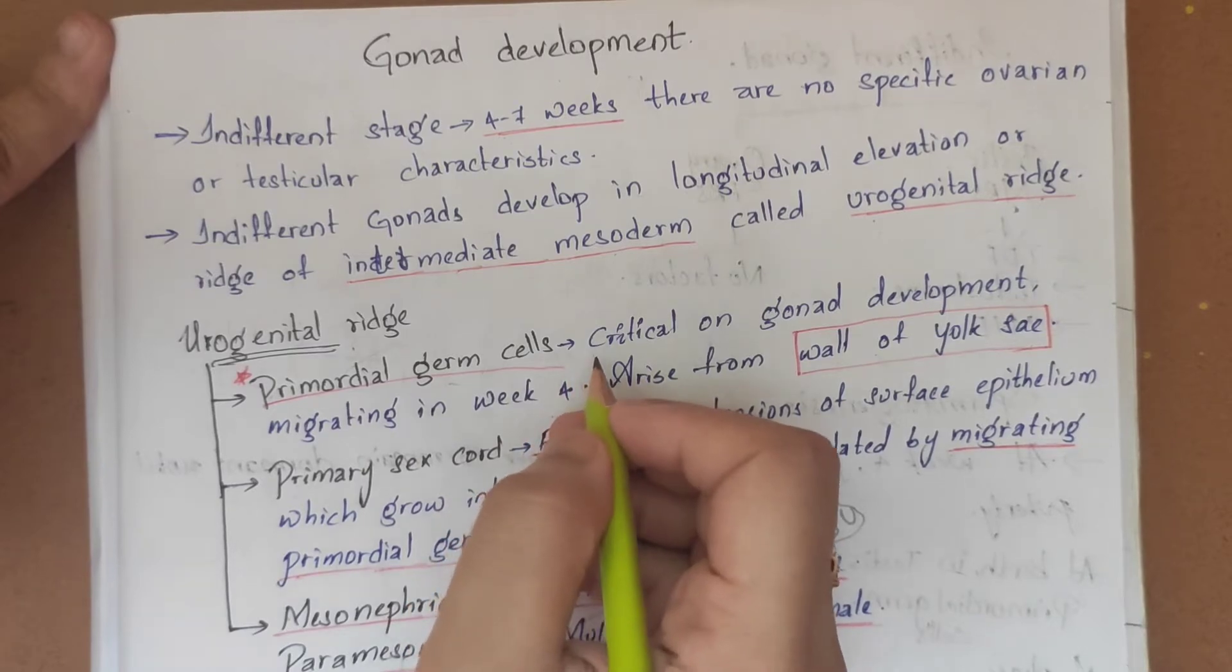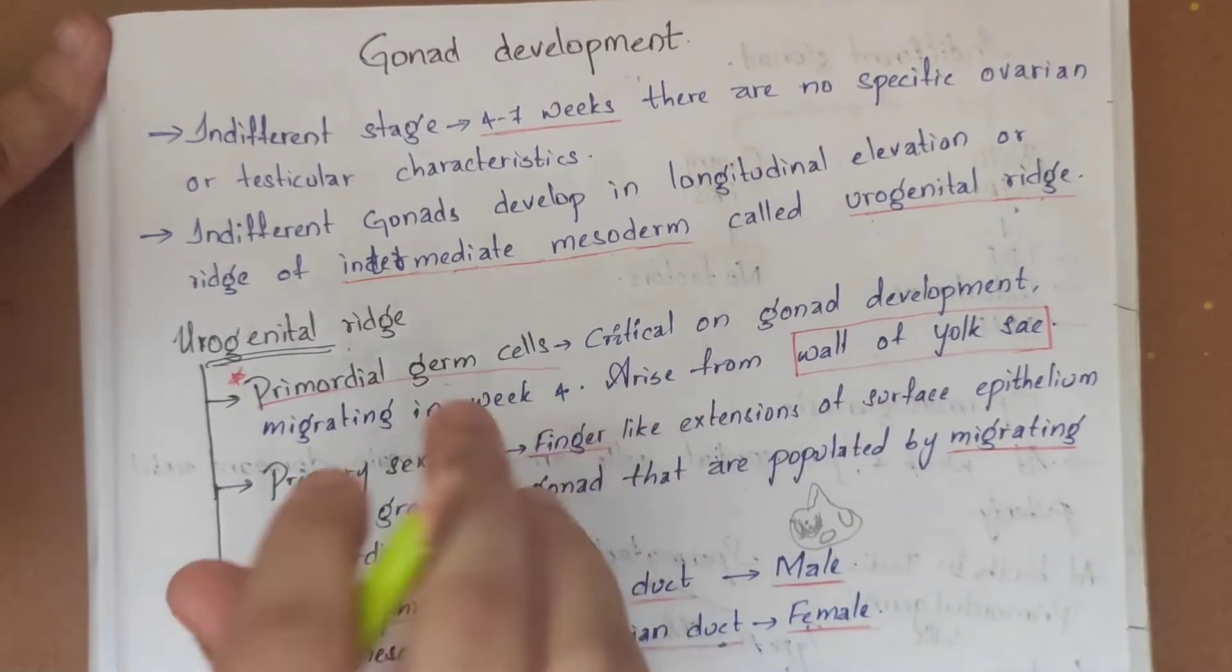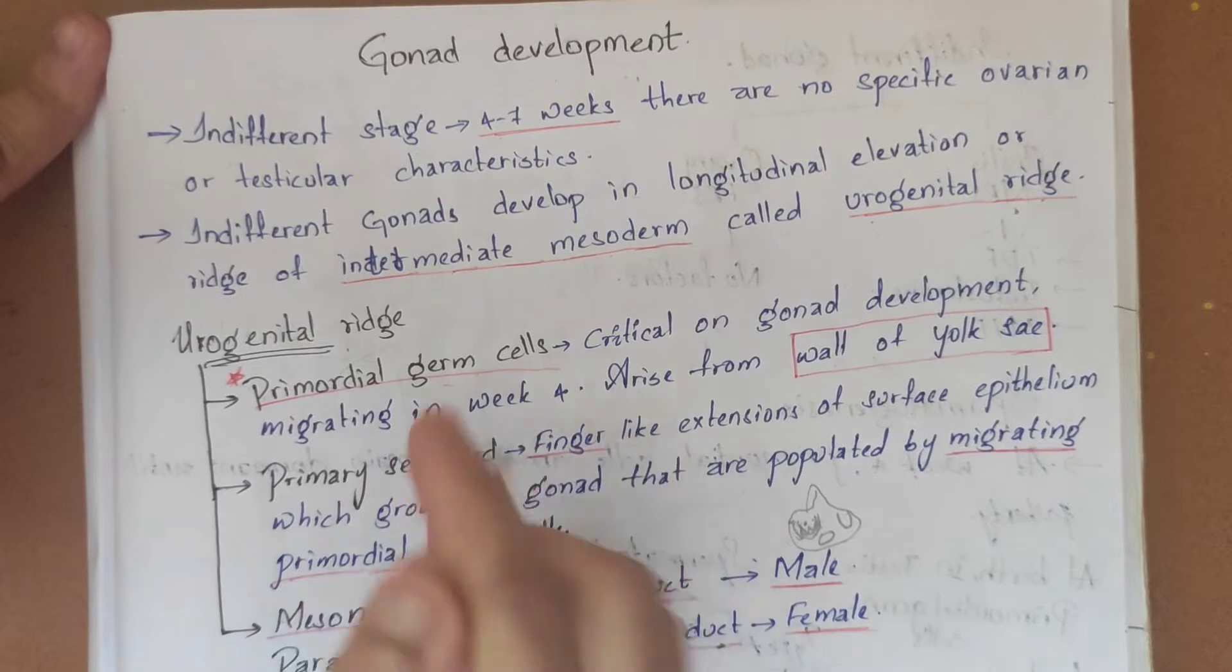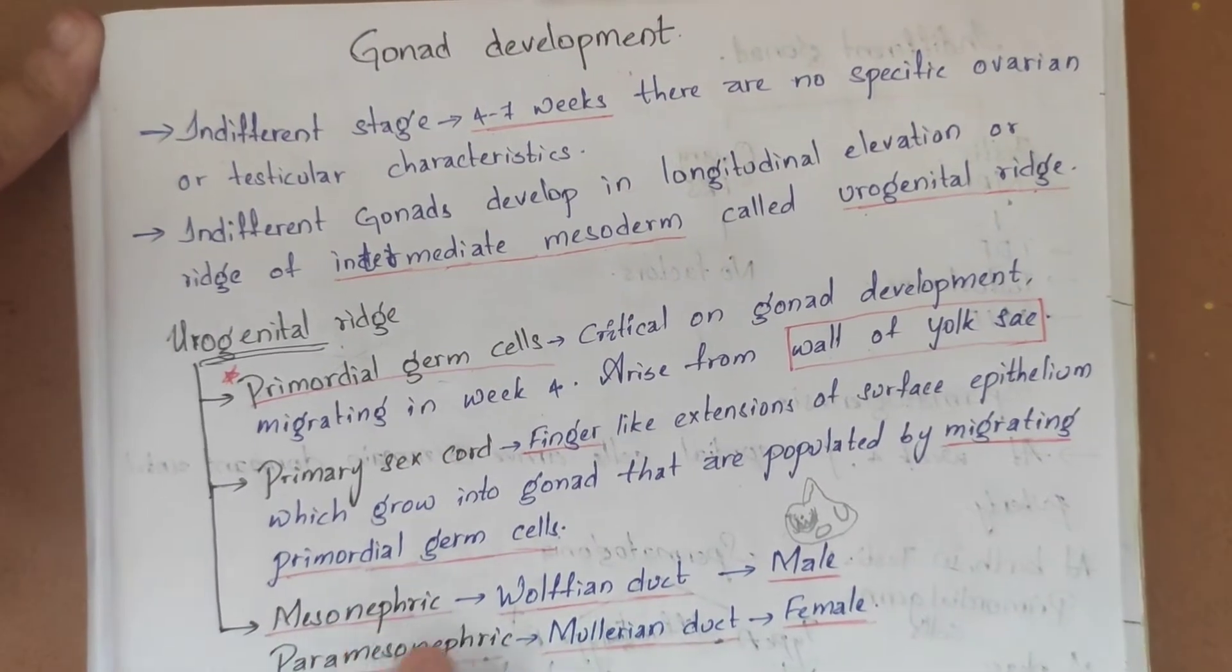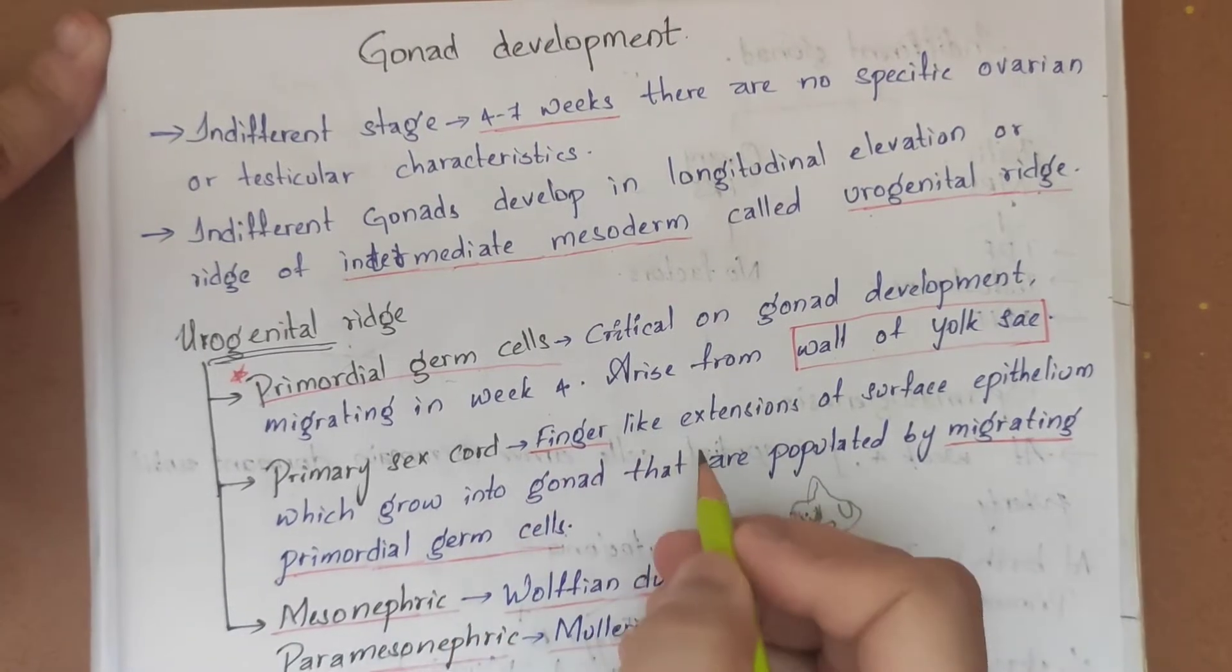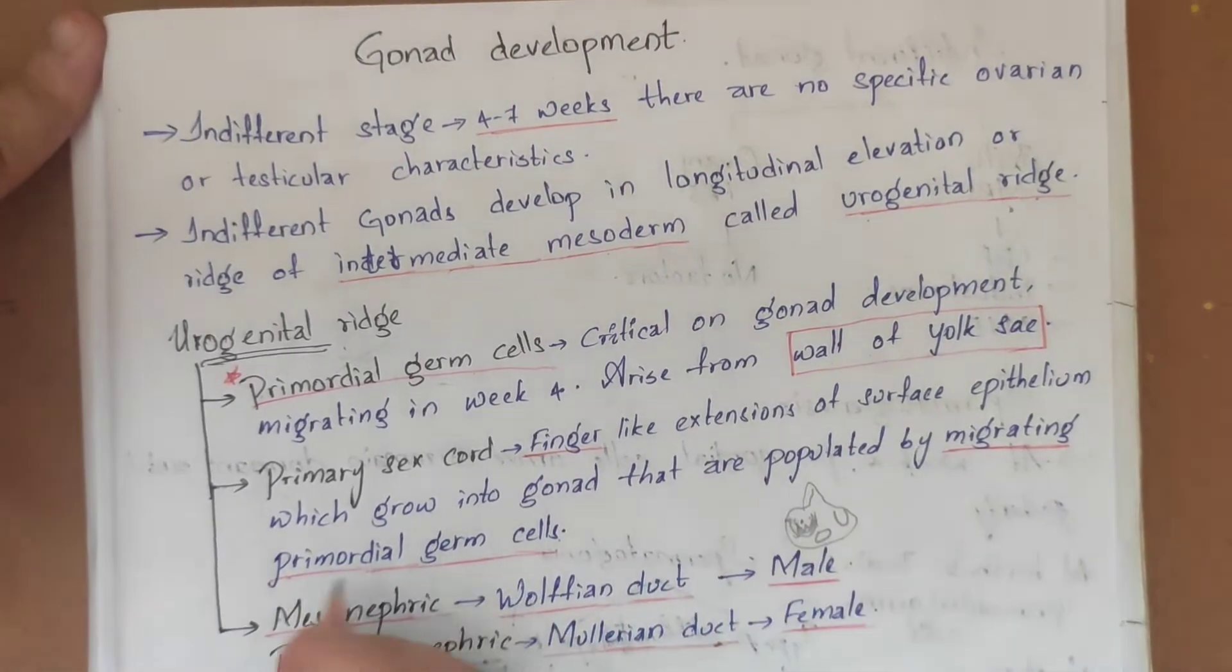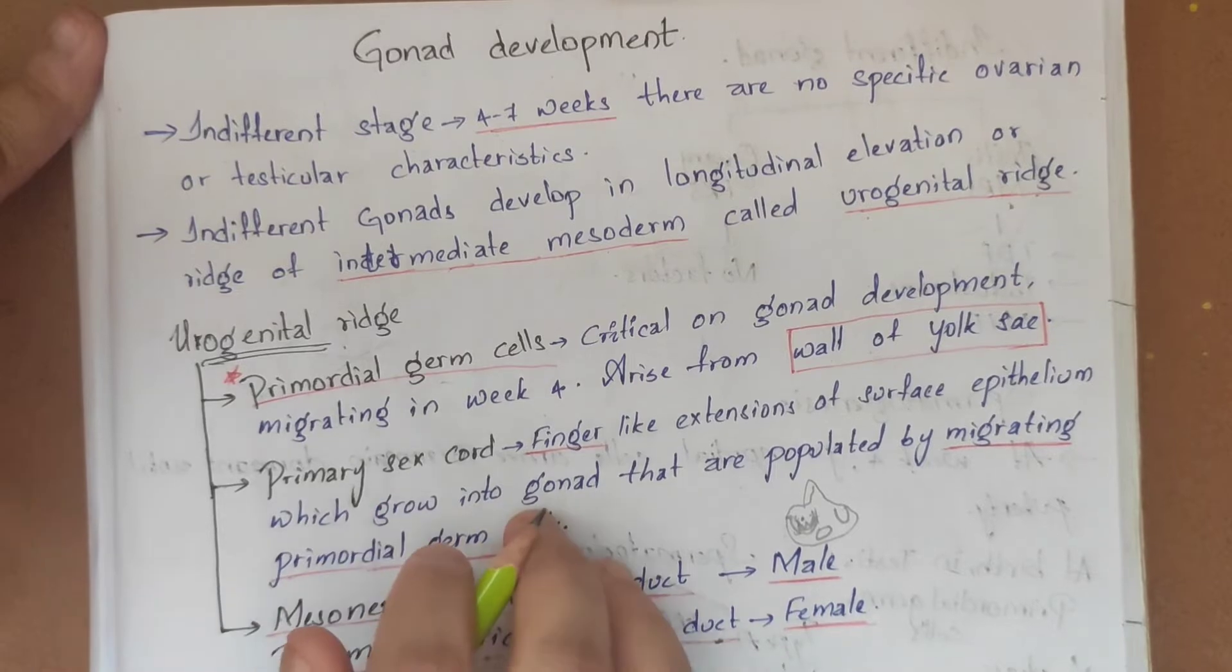These primordial germ cells migrate in week 4 and arise from the wall of the yolk sac. Next are the primary sex cords - finger-like extensions of the surface epithelium which grow on the gonads.